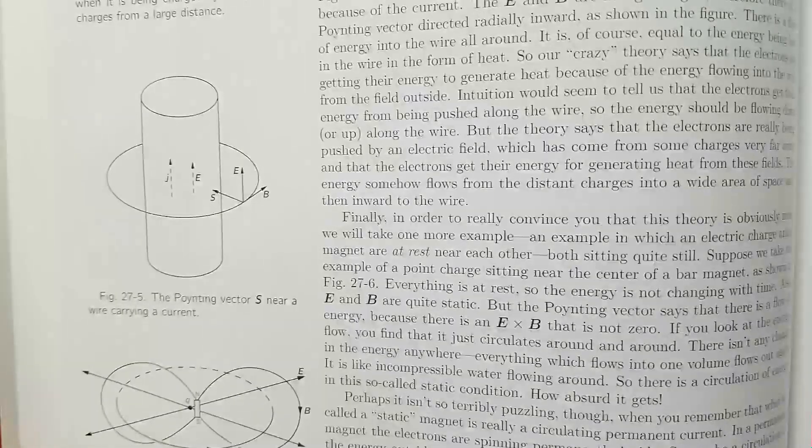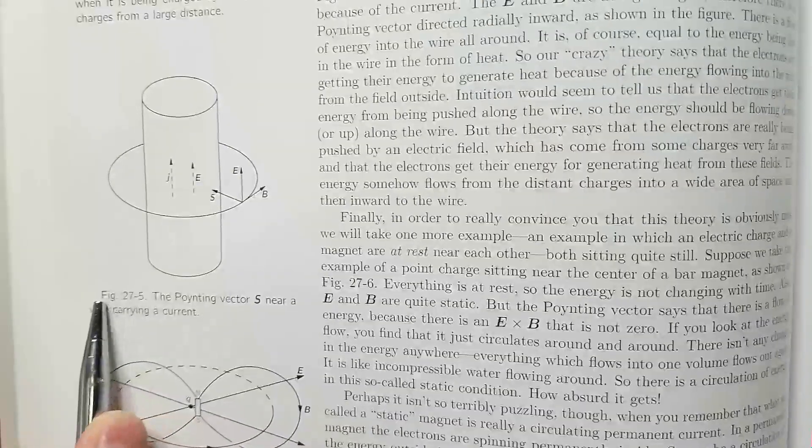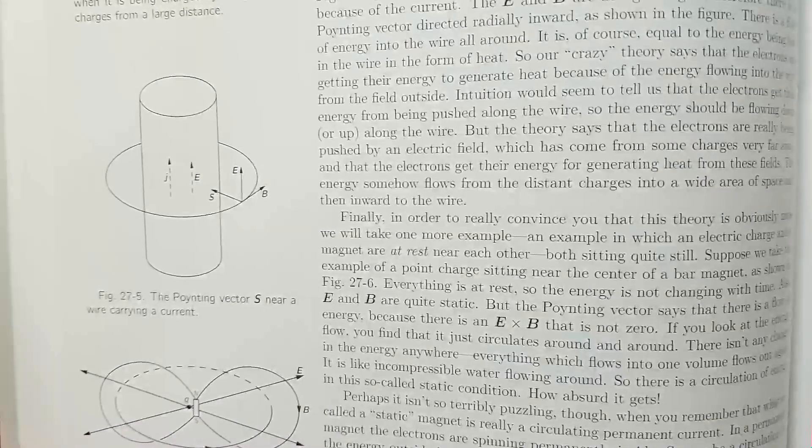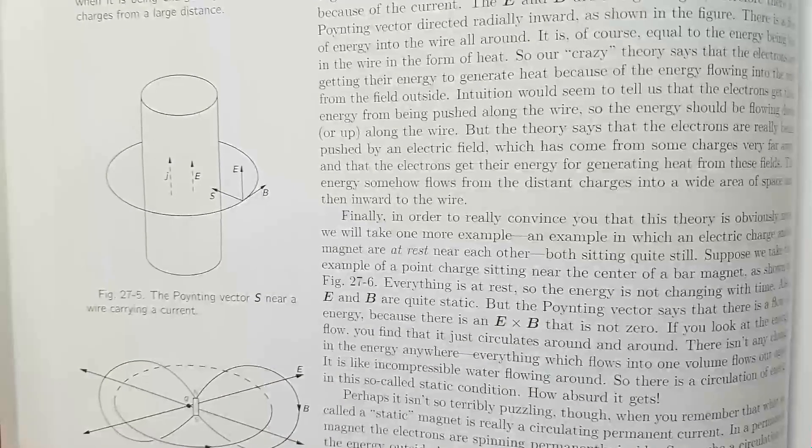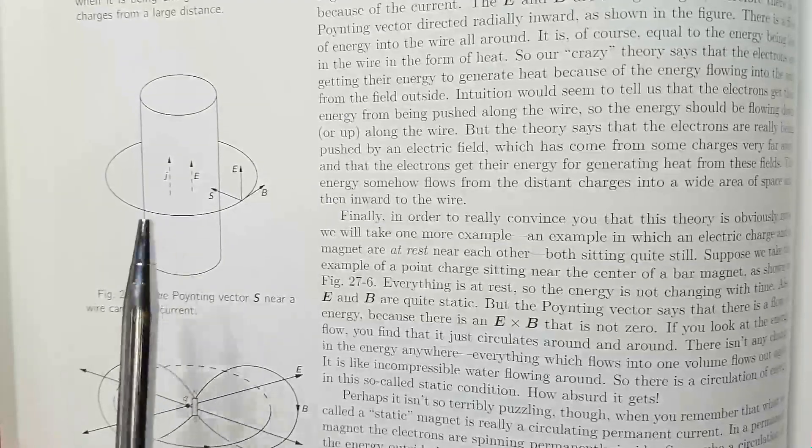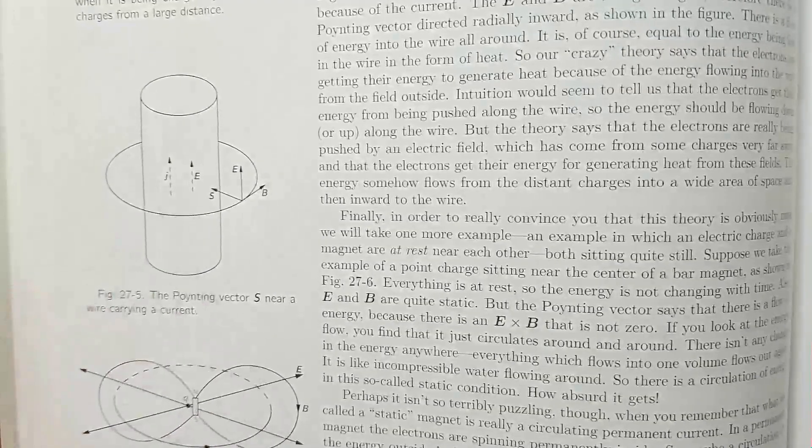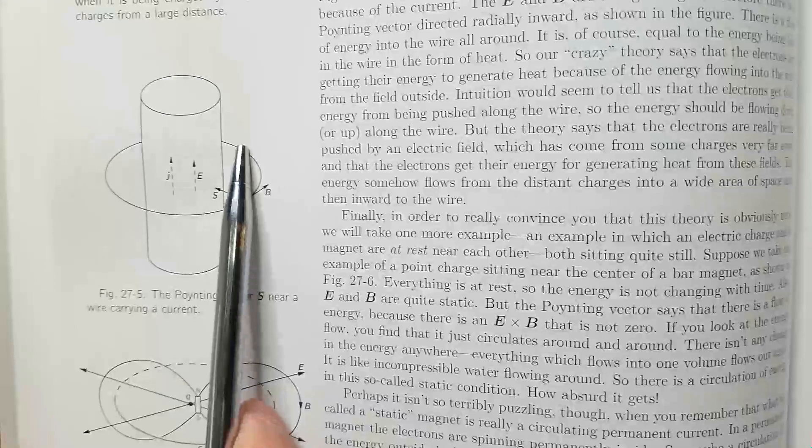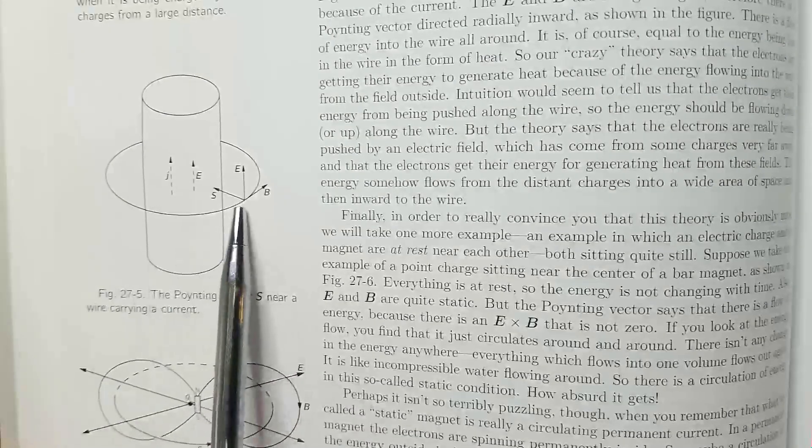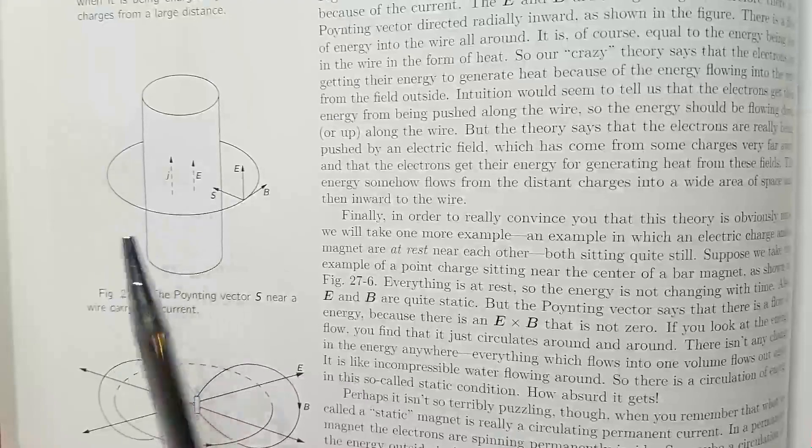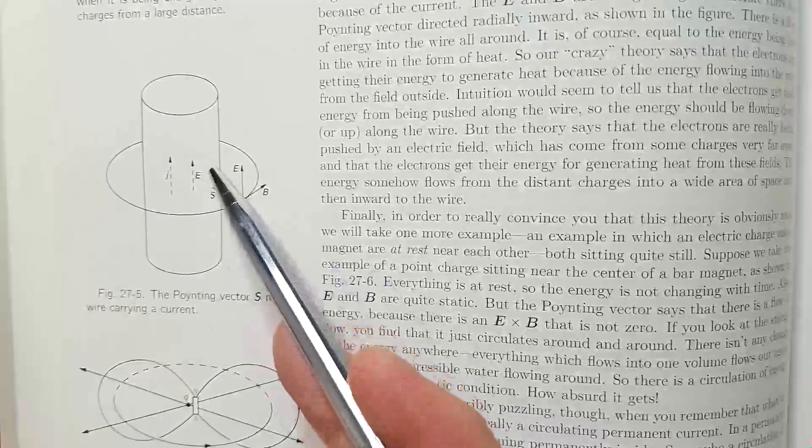Here, in chapter 27, figure 27-5, Feynman is describing this case that Derek also has in his video, namely, current is running through a wire, and we have electric field E and magnetic field B, and their cross-product results in pointing vector of energy flow into the wire from infinity, from outside.